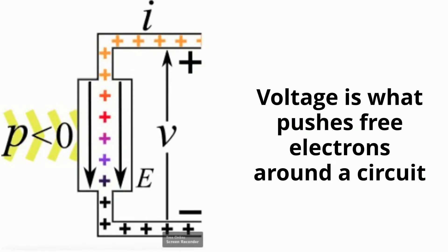Voltage is what pushes the free electrons around a circuit. The greater the voltage, the greater the current. And as voltage decreases, the current will also decrease.